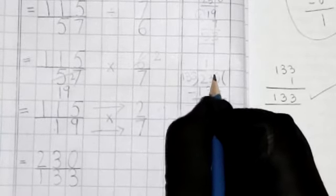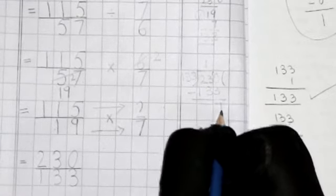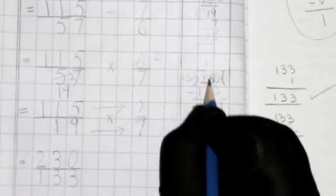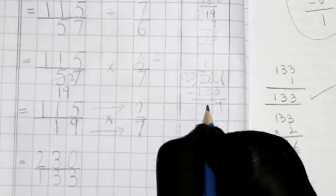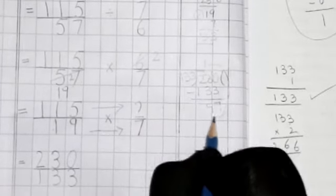1 times 133. We will minus. It is 0. We will carry. 10 minus 3 is 7. This is 12. 12 minus 3 is 9. 97. Now it is smaller. So, this is your answer. Let's write.